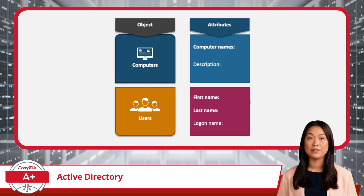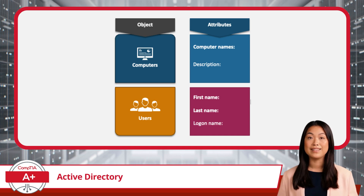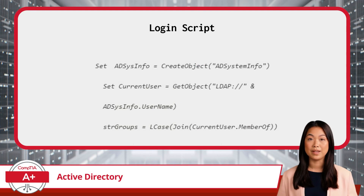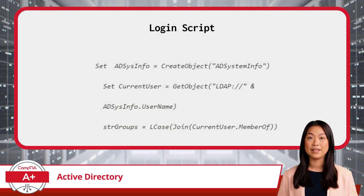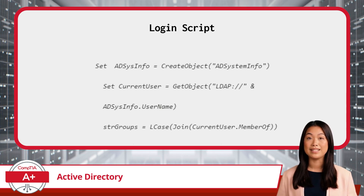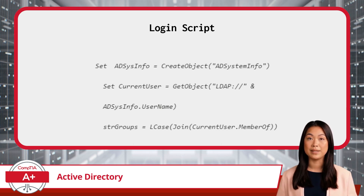By organizing all these objects within a structured hierarchy, Active Directory allows for efficient management and control of the network's resources. With that foundation in mind, let's explore the key components of Active Directory that help maintain order and security within a domain. First, the login script is a set of commands that run automatically when a user logs into a domain, typically mapping network drives, printers, and other resources. If a user cannot connect to any network drives, it often signals that the login script has failed, possibly due to network issues or misconfigurations.